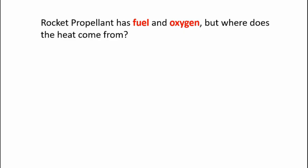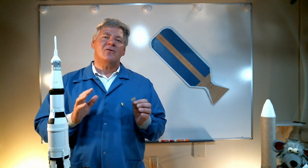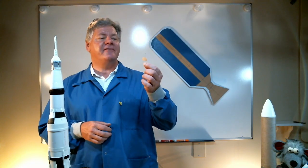But where does the third item come from? Where does the heat come from? Now the initial heat to get the chemical reaction started is supplied by the igniter. The igniter burns and ignites the propellant. Once that happens, the chemical reaction is a self-sustaining reaction. The motor propellant will continue to burn.